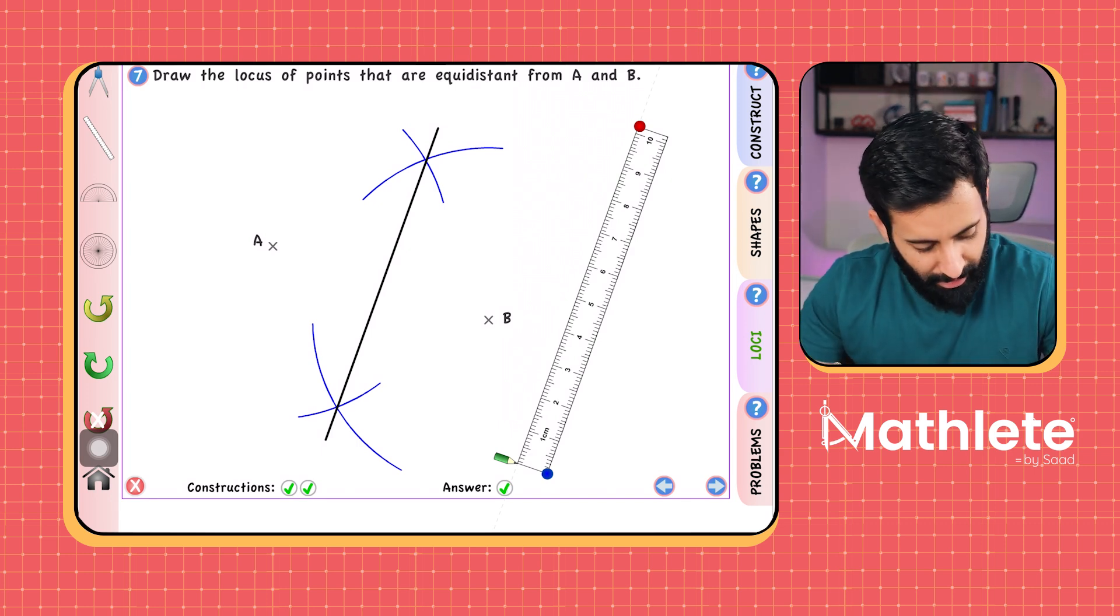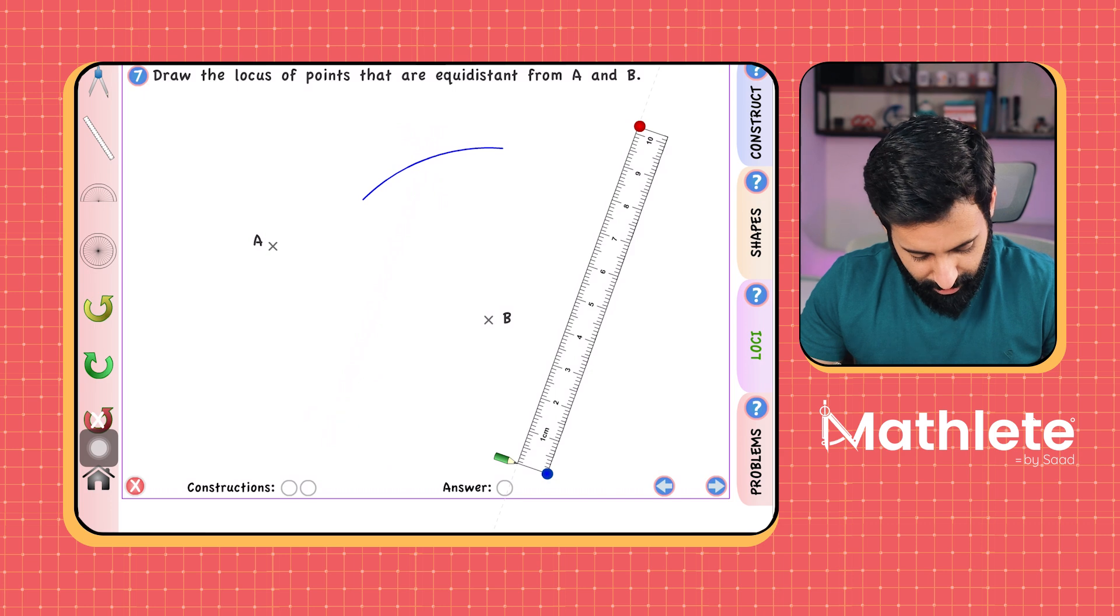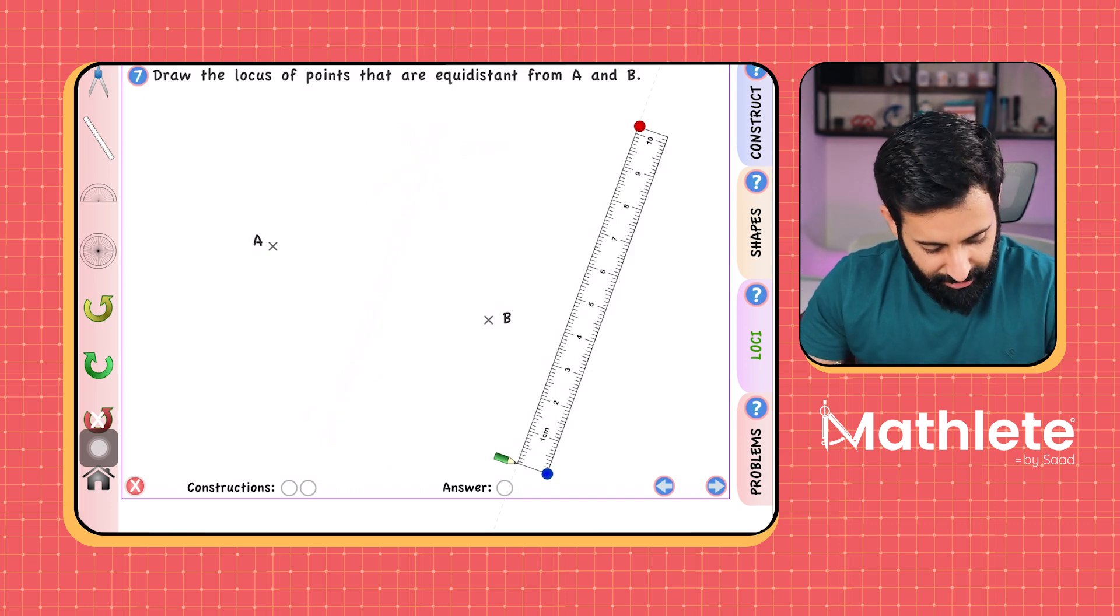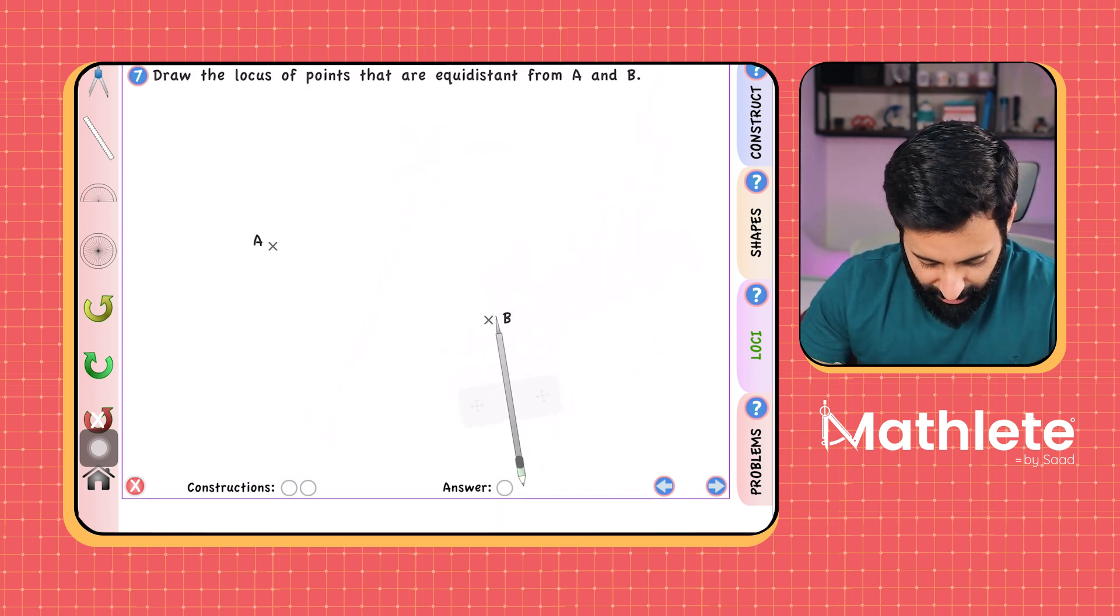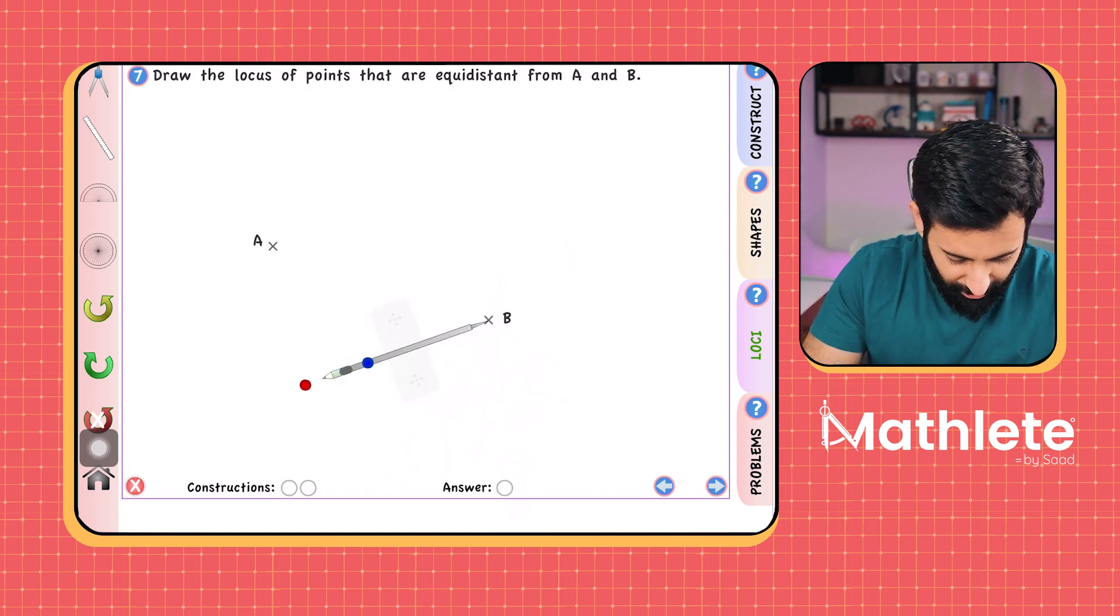So quickly, one more time, let's just clear everything. So what we do is, we place the compass at B. Okay, and then we make an arc.